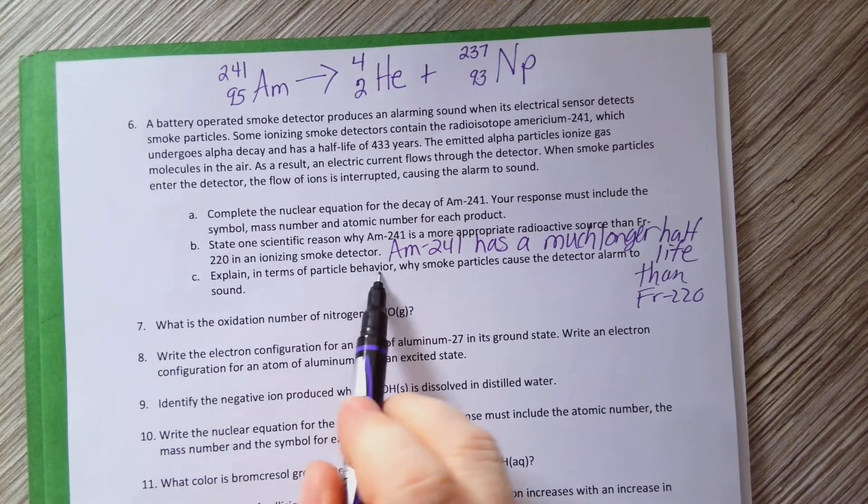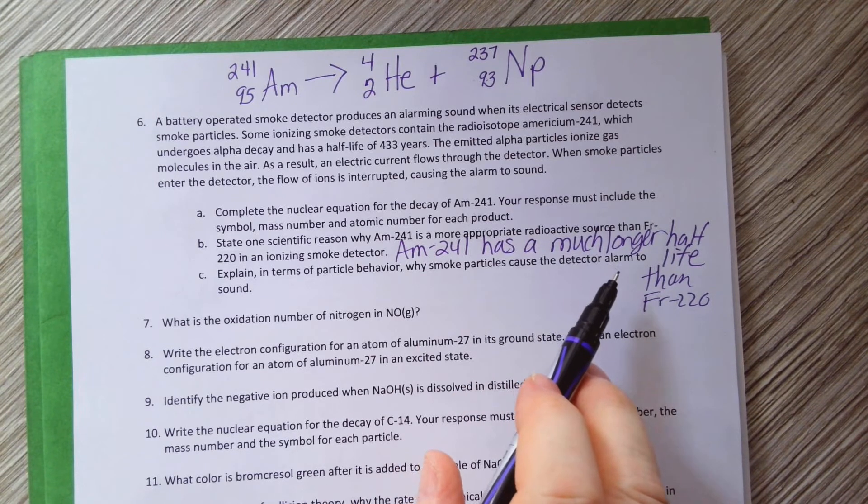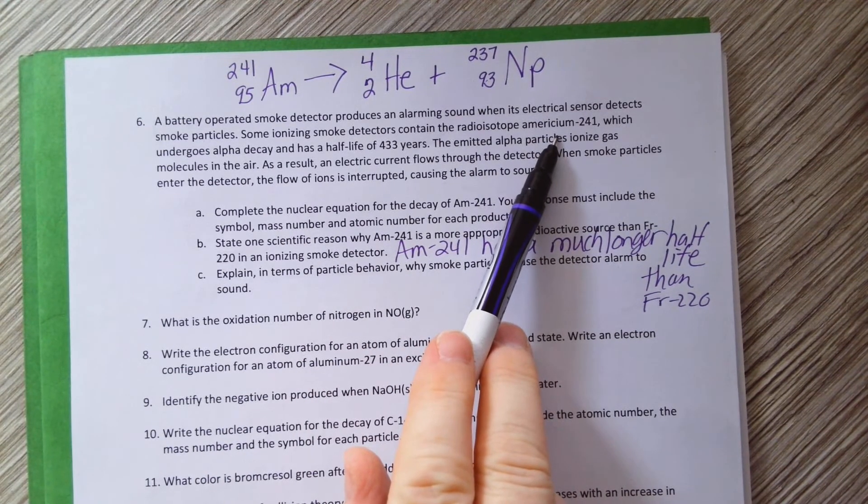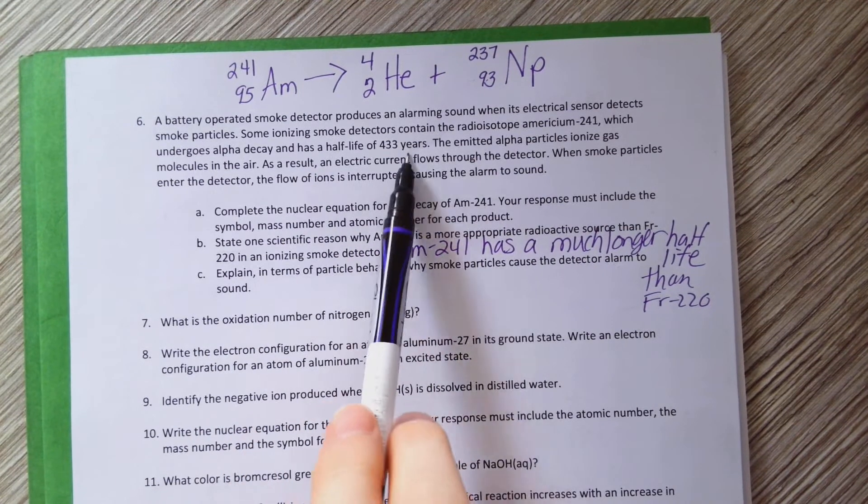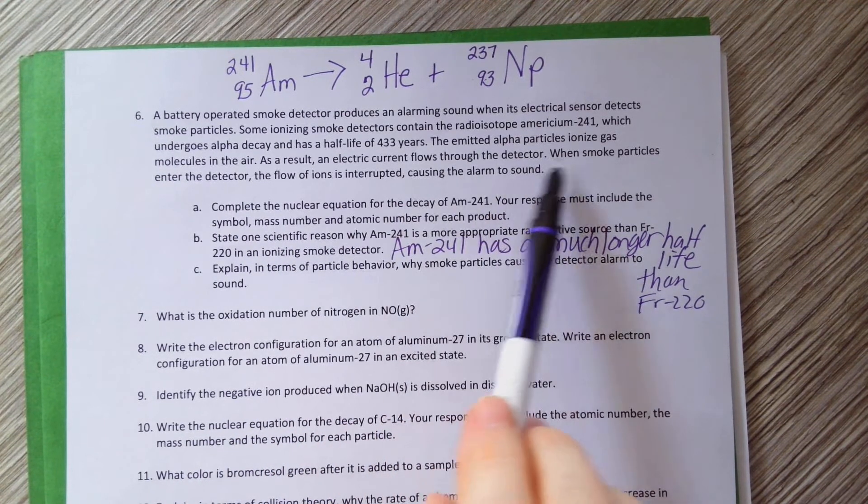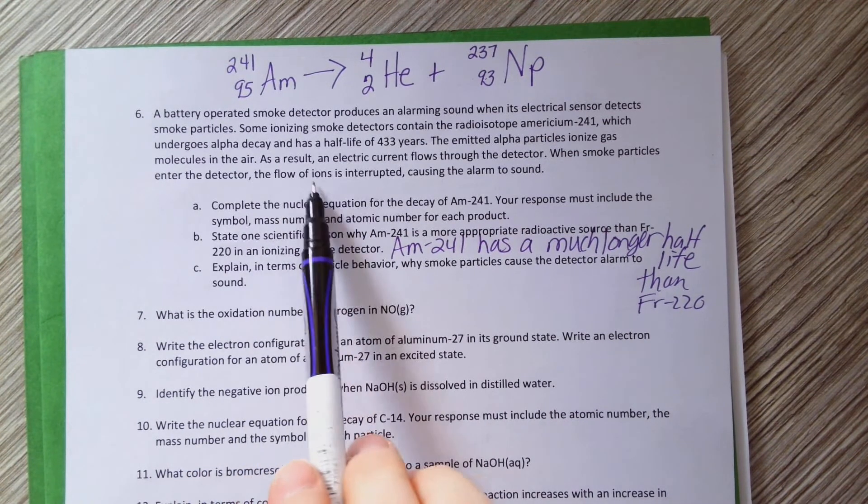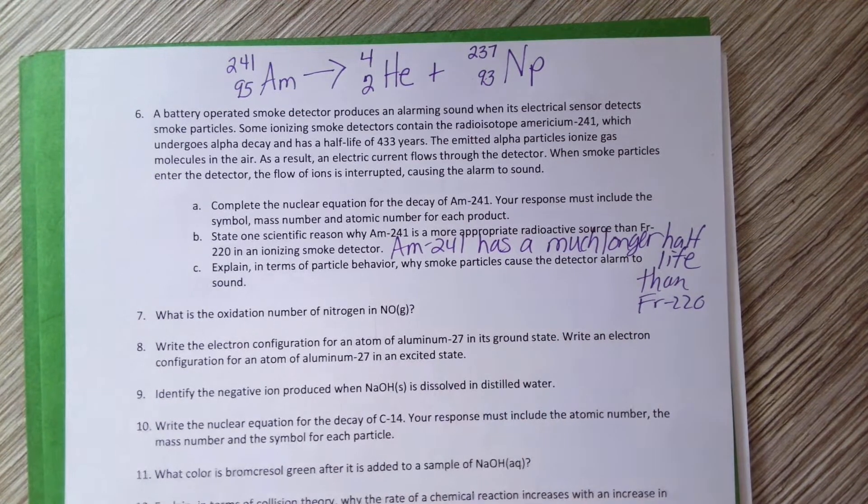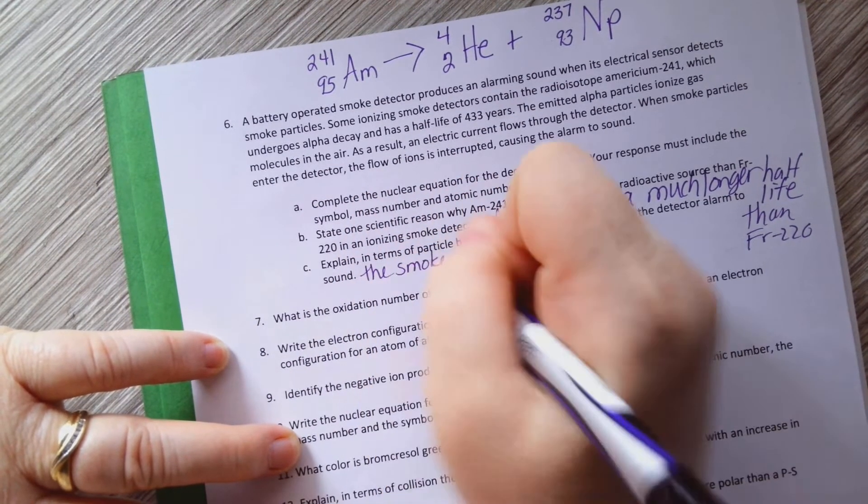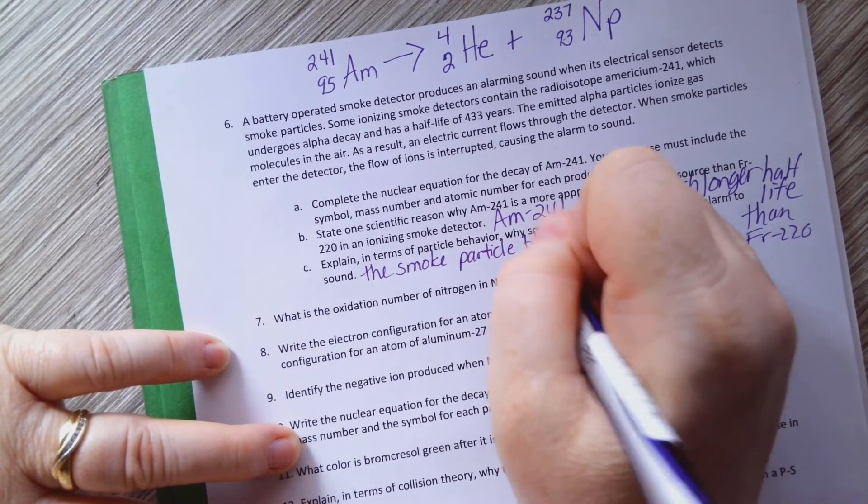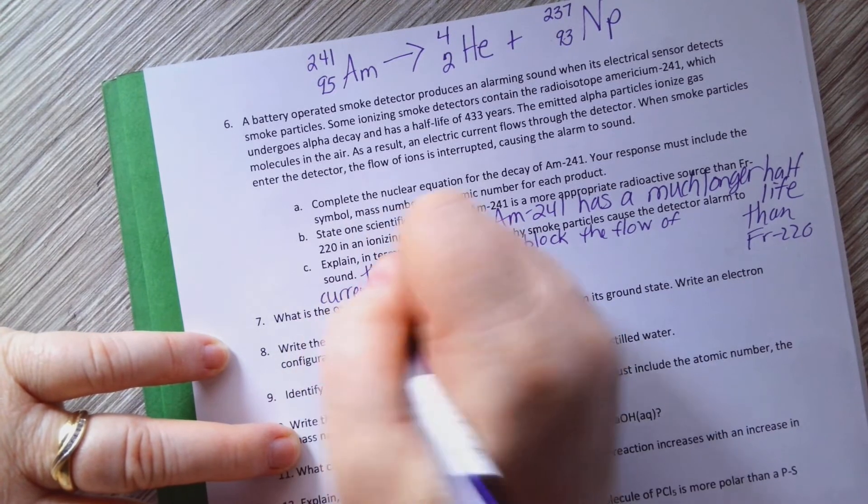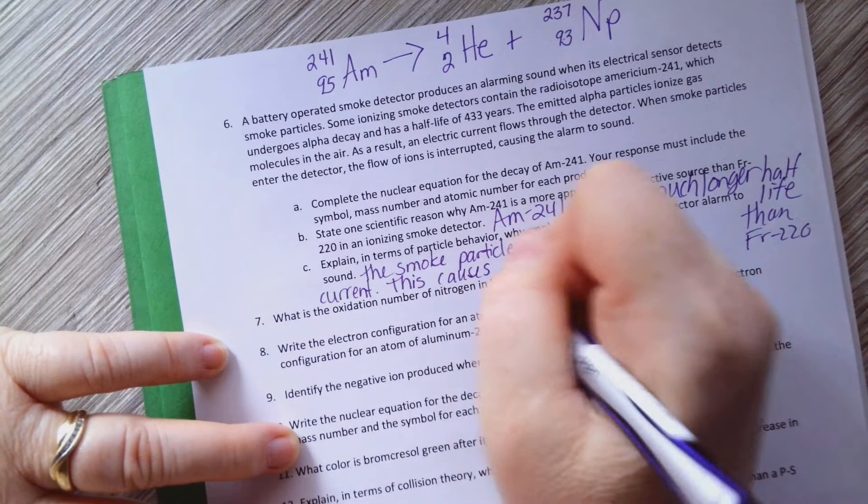Explain in terms of particle behavior why smoke particles cause the smoke detector alarm to sound. Okay, so let's look right here. The americium which undergoes alpha decay has a half-life of this. The emitted alpha particles ionize gas molecules in the air. As a result, an electric current flows through the detector. When smoke particles enter the detector, the flow of ions is interrupted, causing the alarm to sound. So the smoke particles block the flow of current. This causes the alarm.